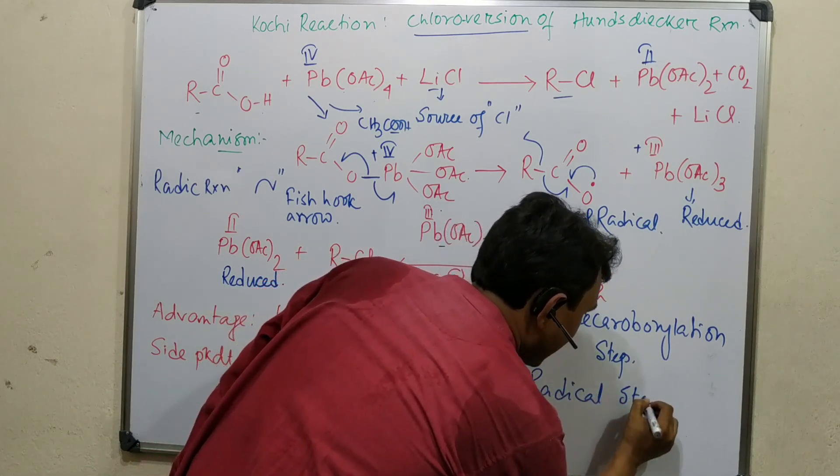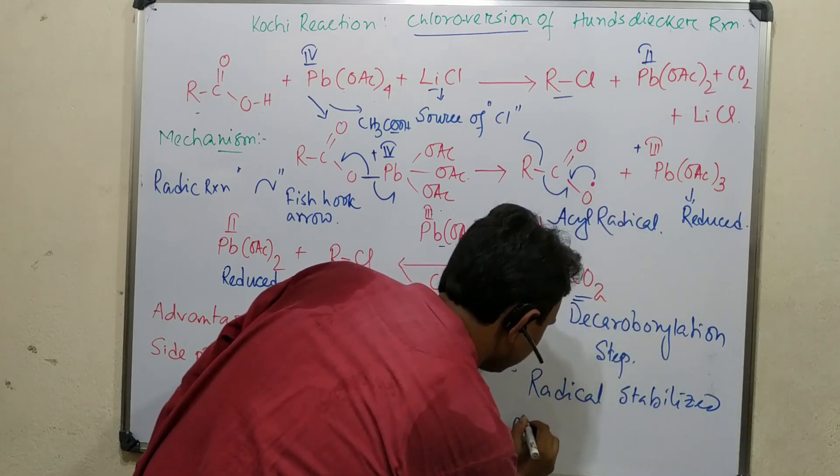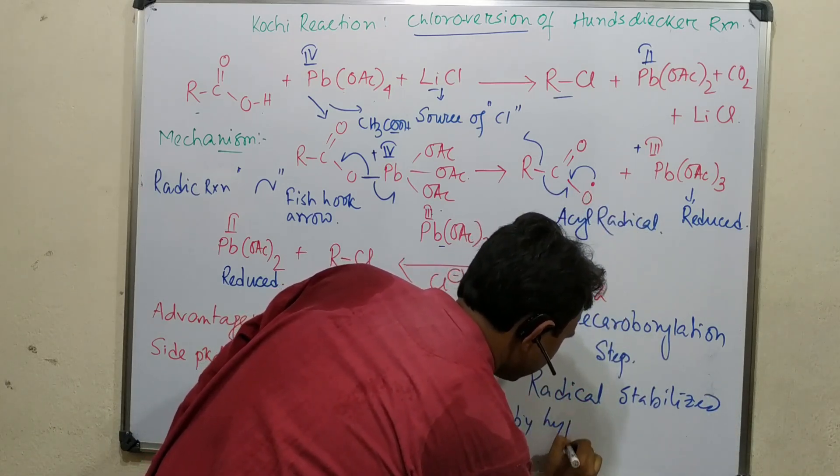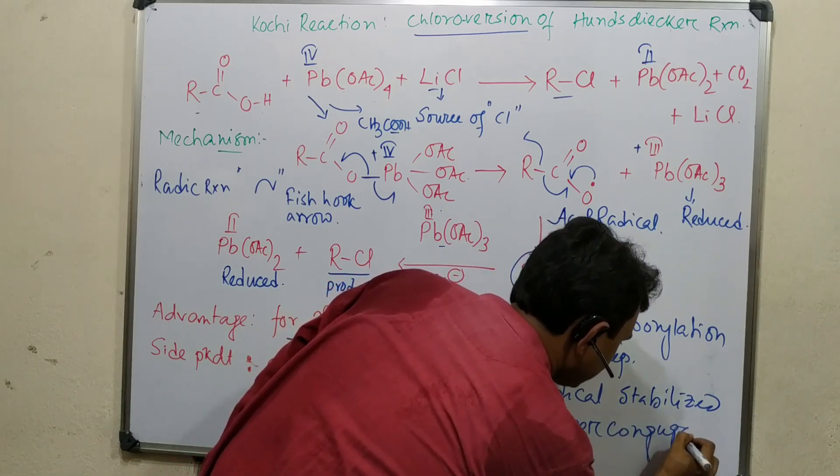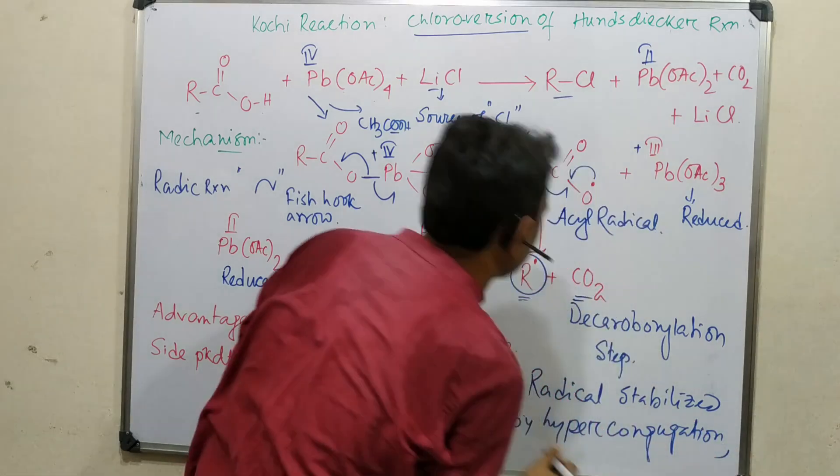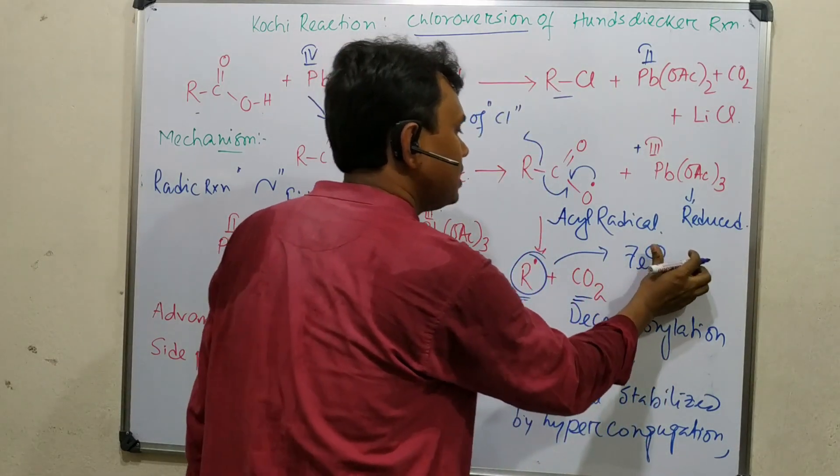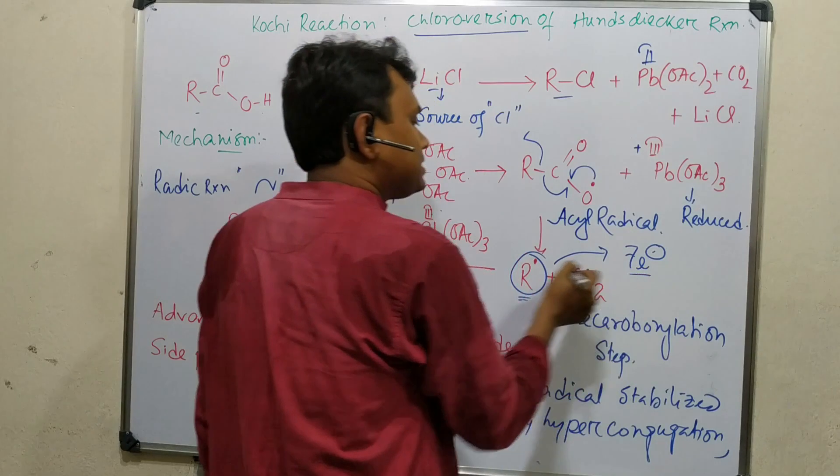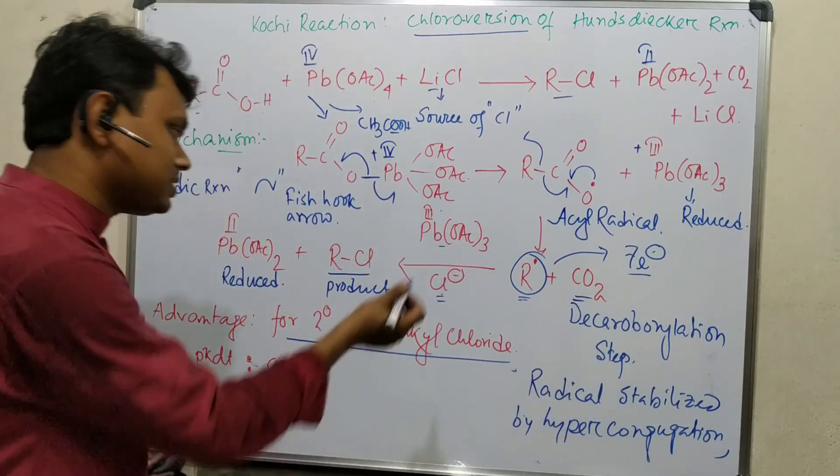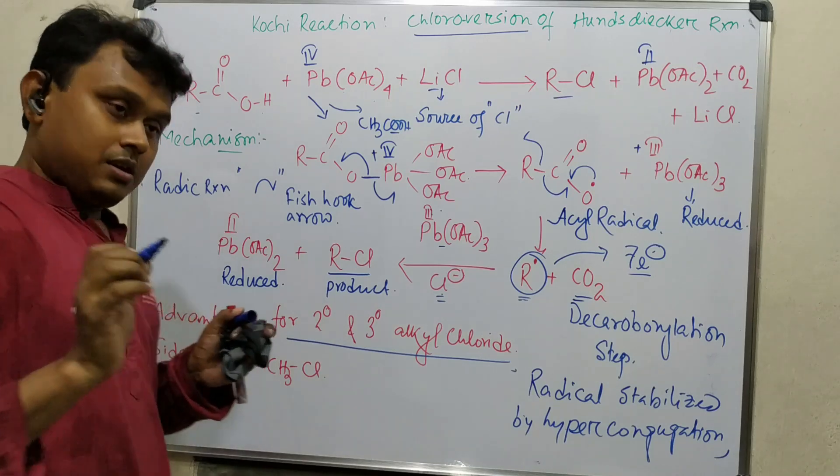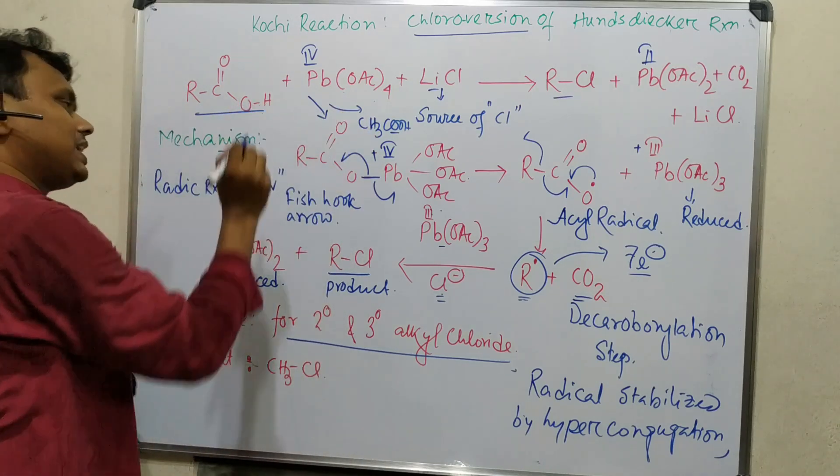Please keep in mind, radicals are stabilized by hyperconjugation. This is a 7-electron species. Carbocations are 6-electron species, radicals are 7-electron, and carbanions are 8-electron. This is the electron definition.